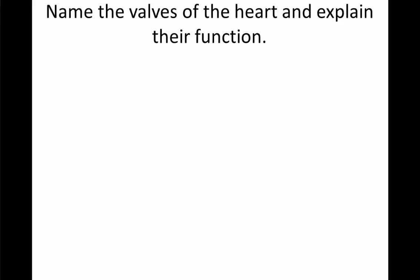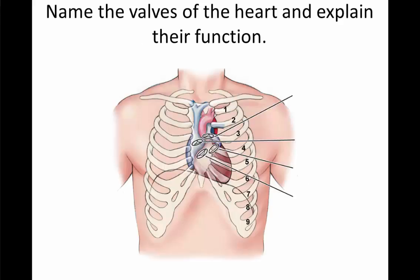Let's name the valves of the heart and explain their function. Within the heart, there are four valves: the pulmonic valve, the aortic valve, the bicuspid valve, and the tricuspid valve. The pulmonic valve is right at the beginning of the pulmonary artery. The aortic valve is right at the beginning of the aorta. The bicuspid valve gets its name because it's made up of two flaps, and the tricuspid valve has three flaps. The overall function of these valves is to prevent backflow within the cardiovascular system and the heart itself.